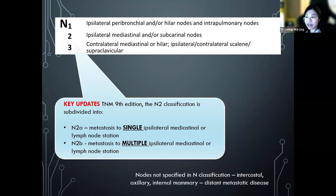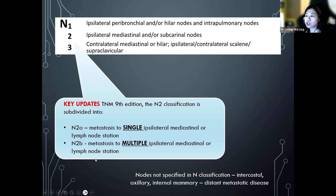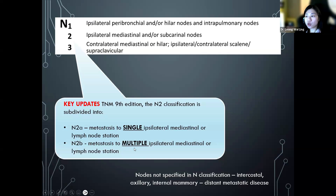In the ninth edition, there is a change in the N staging. N2 is further subdivided into N2a and N2b. N2a indicates metastasis to a single ipsilateral mediastinal lymph node station — meaning only one station is involved — whereas N2b indicates metastasis to multiple ipsilateral mediastinal lymph node stations.